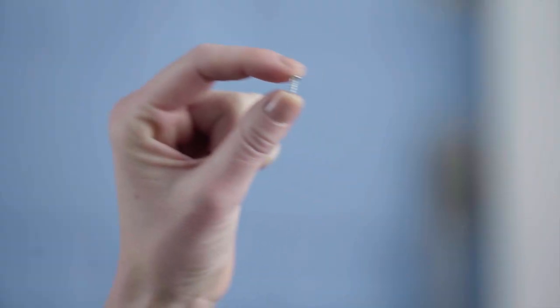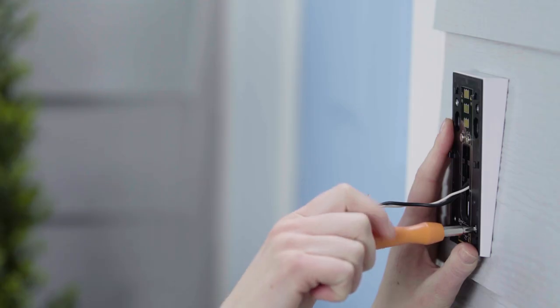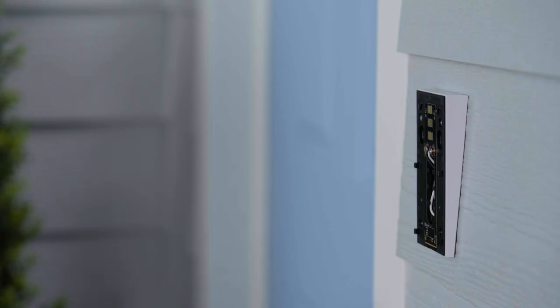The very short screws are for attaching your Ring Doorbell's mounting bracket to the Wedge Kit after it's installed on your wall.